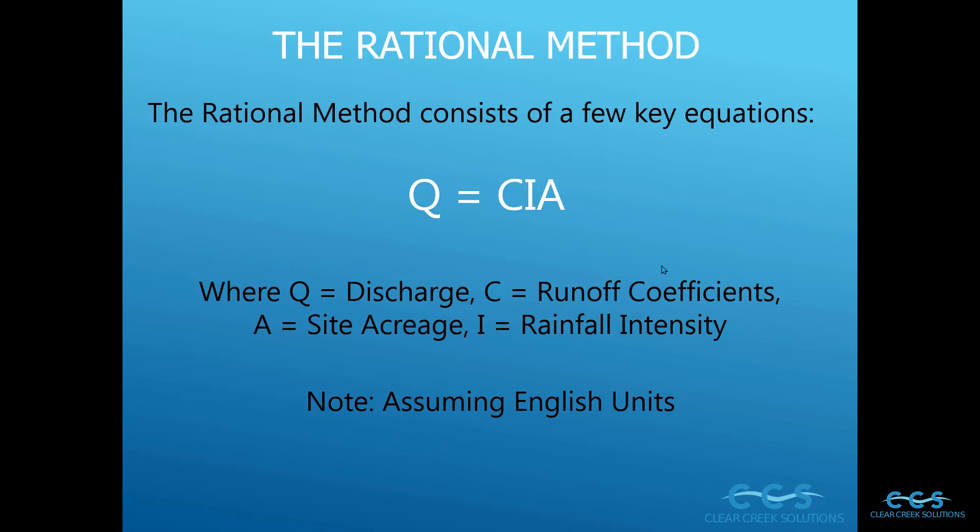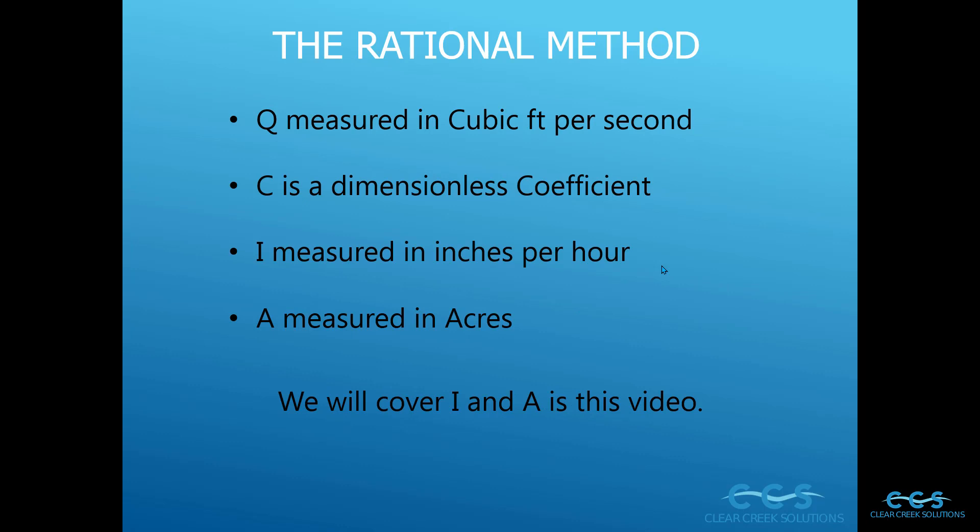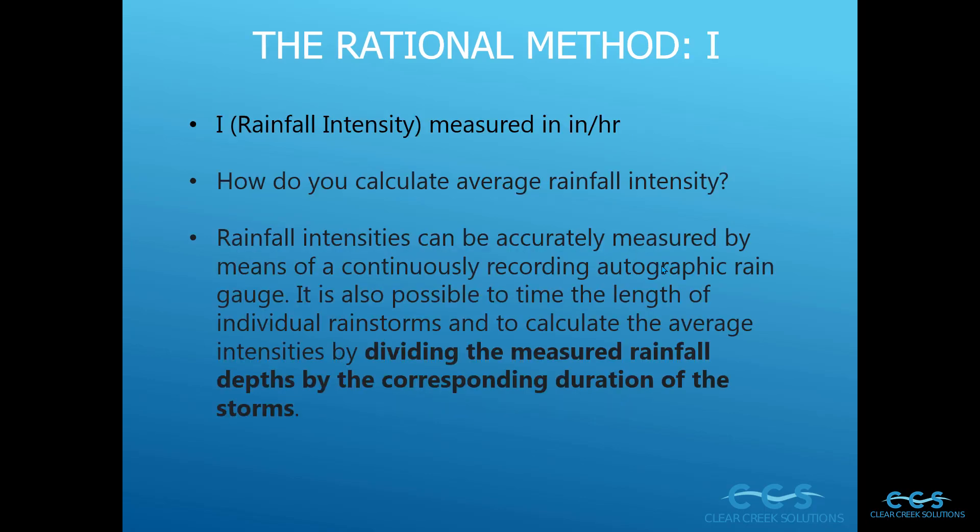In the previous video we went over Q and C. This video we're going to go over site acreage and I, rainfall intensity. Just to remind you about the units: Q is measured in cubic feet per second, C is dimensionless, I is typically measured in inches per hour, and A is in acres.